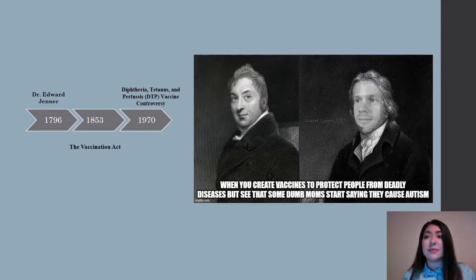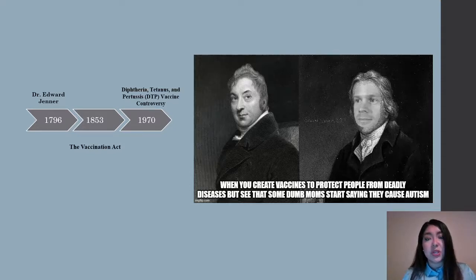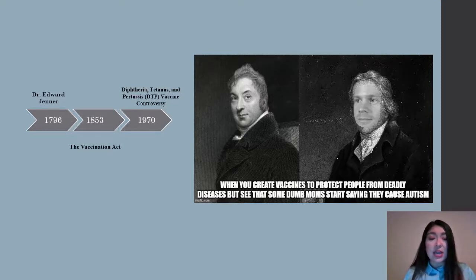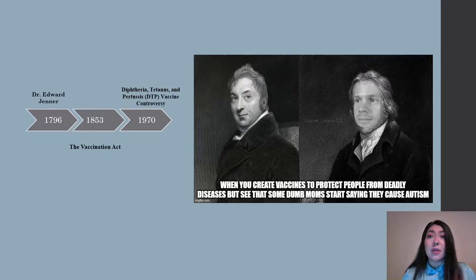they enacted the Vaccination Act of 1853, which ordered mandatory vaccination for infants up to three months old. That's when anti-vaccination leagues and groups started, and their version of conspiracy theories was that if people received these vaccines, they would develop cow-like traits. Moving on to 1970, there was a diphtheria, tetanus, and pertussis vaccine controversy that started in a hospital in London, where they alleged that 36 children had developed neurological conditions following DTP immunization. That did not become public in the U.S. until about 10 years later with a documentary called Vaccine Roulette.